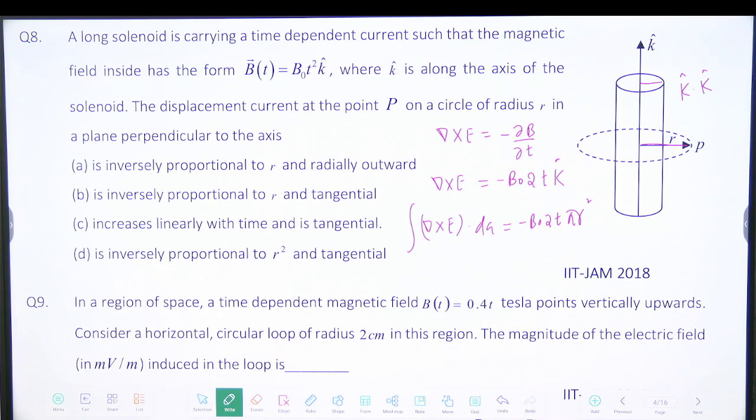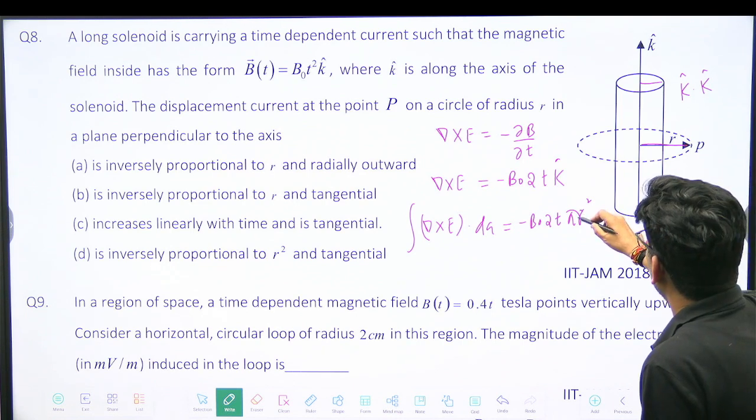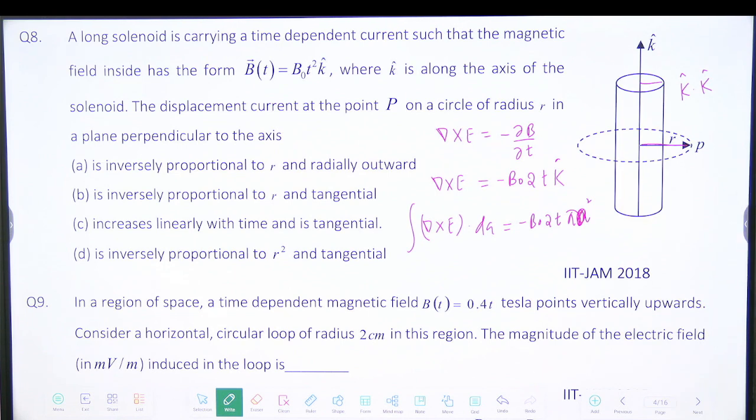And this is a solenoid. So what is the radius of this solenoid? I should write here pi A squared, because only magnetic field will be going through the solenoid, not in the whole area. Are you getting my point?